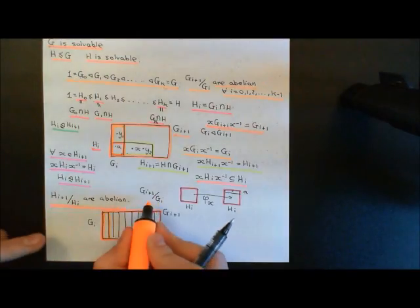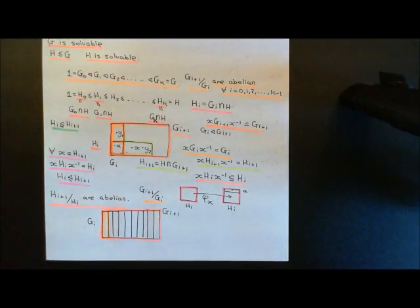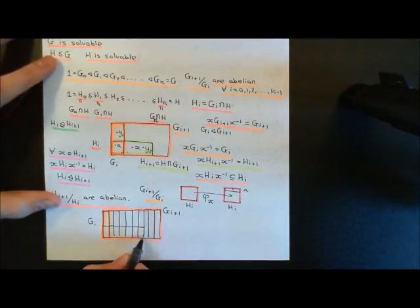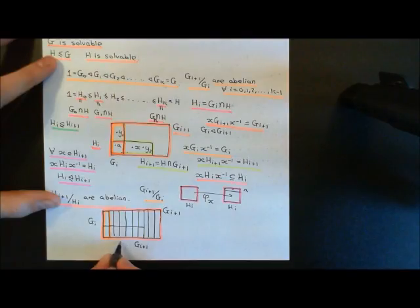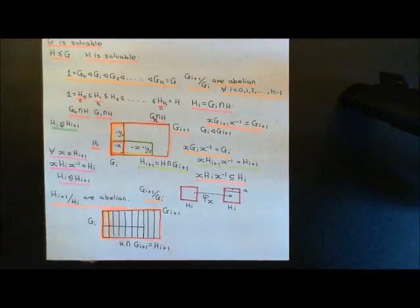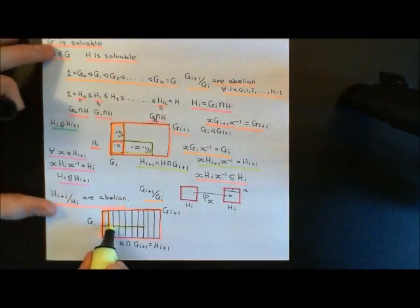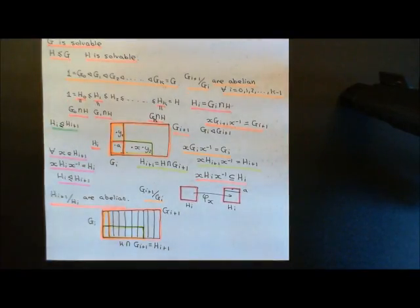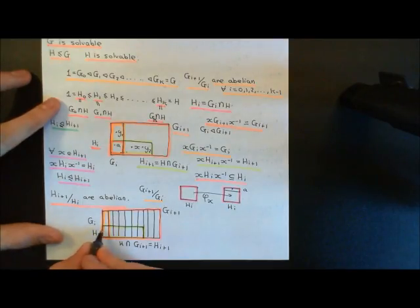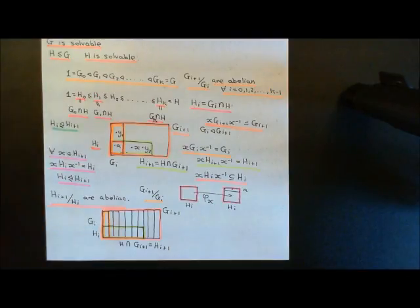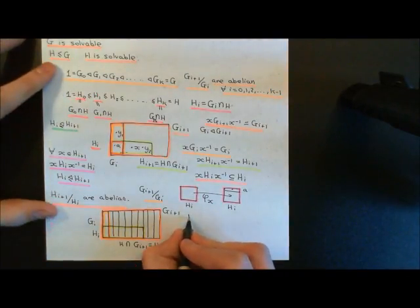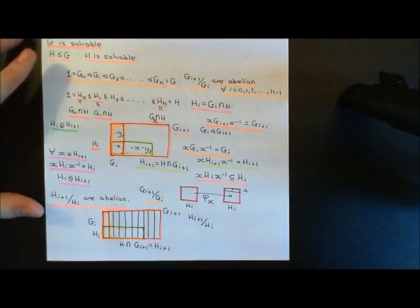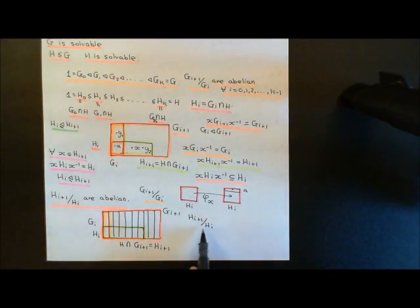Now let me add on our subgroup H ∩ G_i, which is H_{i+1} — a reminder that we're not showing all of H here, just the portion of H that is inside G_{i+1}. And there we have capital H_i, which is capital H ∩ G_i. So what we're now considering doing is quotienting H_{i+1} out by H_i, and I want to conclude that this is going to be abelian, somehow from the fact that G_{i+1} quotiented out by G_i is abelian.